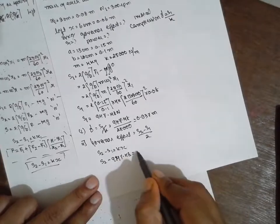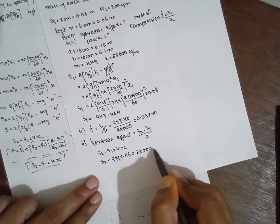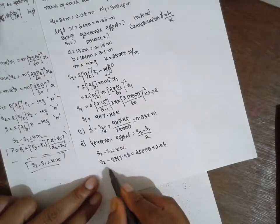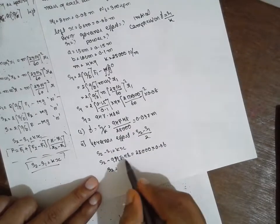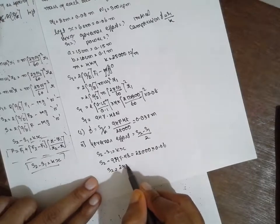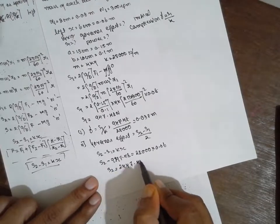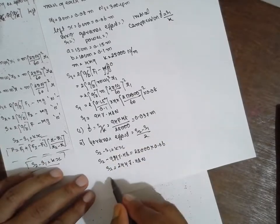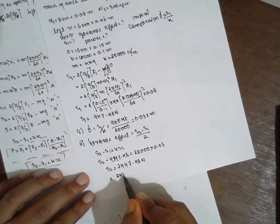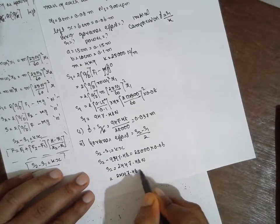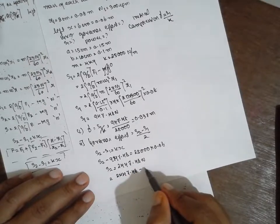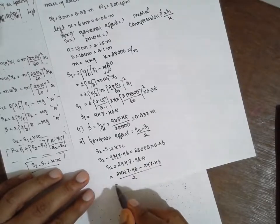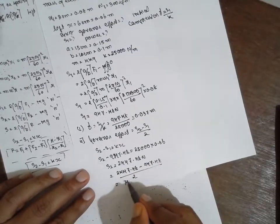So governor effort = (2447.48 − 947.48) / 2, which equals 750 N.